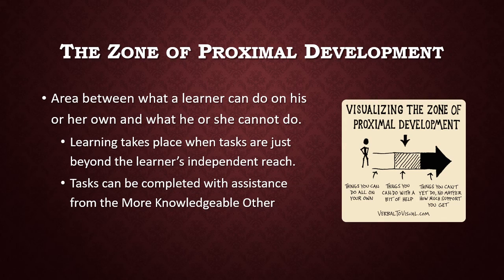The more knowledgeable other helps the learner complete a task that is just beyond the learner's independent reach. This is what Vygotsky called the zone of proximal development — the area between what a learner can do on their own and what they cannot do at all. Tasks in the zone of proximal development are ones they can accomplish with a bit of assistance from someone who knows a little more.